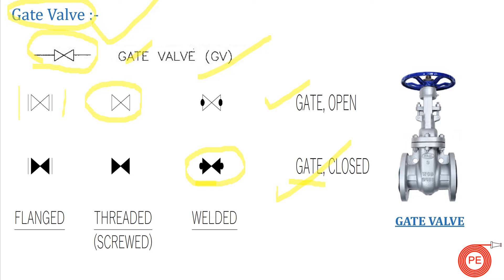For end connections: if there are two lines beside the valve symbol, the valve is flanged. If there is nothing beside the valve symbol, the valve is threaded. If there are two dots on the end of the valve, the valve is welded. These symbols may vary slightly from designer to designer, but the basic symbol remains the same.